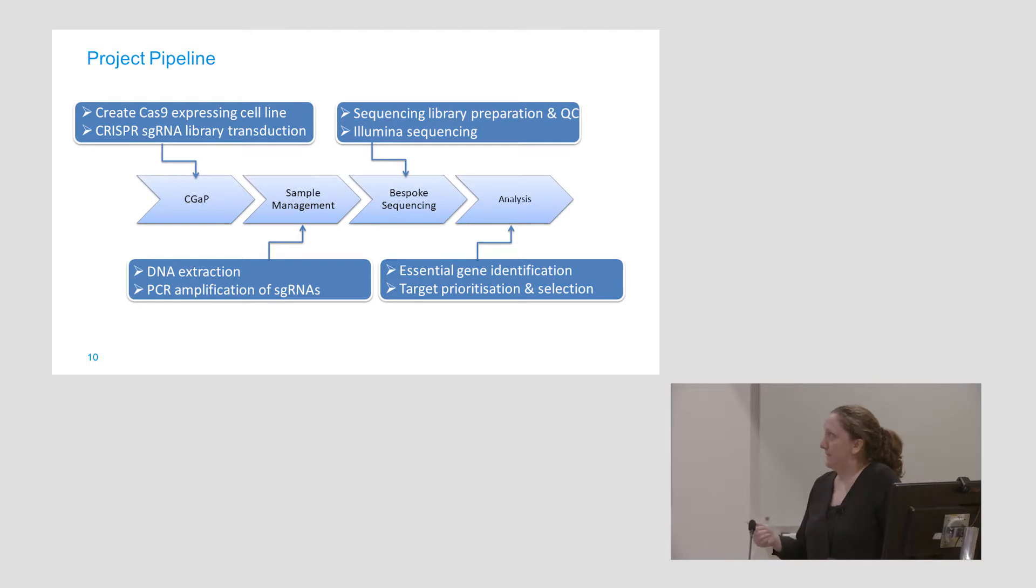We have a facility in Sanger called CGAP, cellular generation and phenotyping. These do all my cell culture for me. They will grow all my cells. They make the cells express the Cas9, so the Cas9 is what does the actual cutting. And they'll put the CRISPR guides into the cells for me. They then pass on to the sample management team where we extract DNA. And then we amplify up the guides that are left just so that when we go to sequence it's easier for us. We have more guides. It's just easier to sequence at the end.